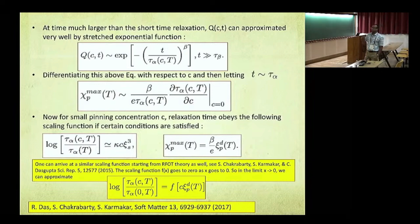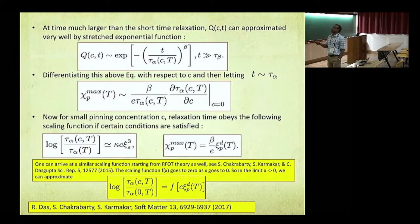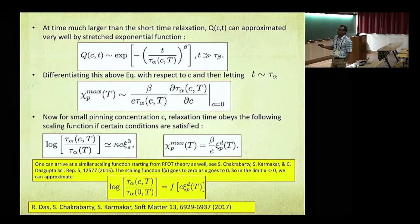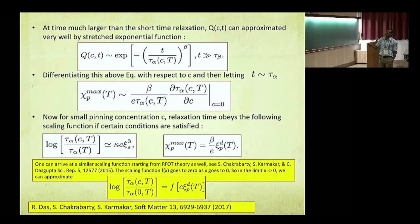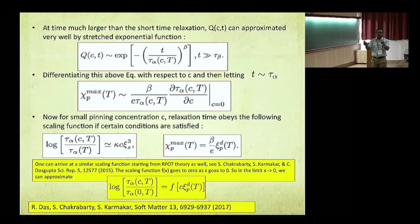Coming back to the pinning susceptibility: it is related to the derivative of the two-point function. You can approximate the long-time correlation function as a stretched exponential where the relaxation time explicitly appears. Taking the derivative with respect to the pinned particle concentration gives the pinning susceptibility, which turns out to be nothing but a derivative of your relaxation time. Using the scaling ansatz for how relaxation time depends on pinning concentration, you can plug back in and show that the pinning susceptibility peak height is directly related to the correlated volume — and nothing else. So the peak height of the numerical derivative of your correlation function is directly your static volume.